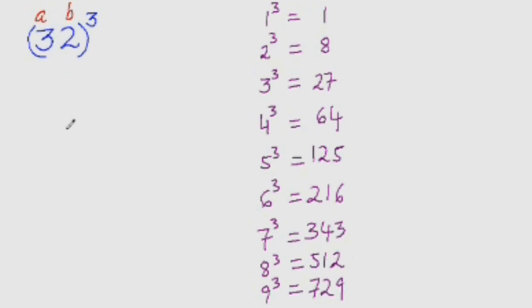Now see the pattern in which we are going to put the digits. So it would be A cube, A square B, AB square, and B cube. In the next line we are going to double up these two numbers. So 2 times A square B and 2 times AB square. Then we simply add the numbers. This is the pattern that we are going to follow. So now let's try to cube 32 using this pattern.